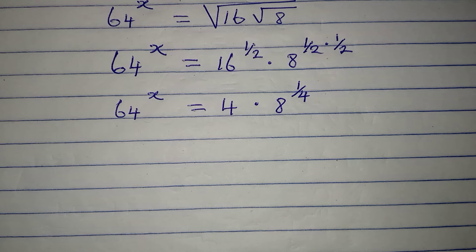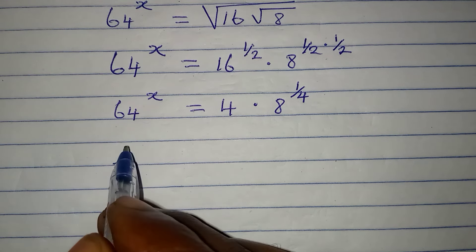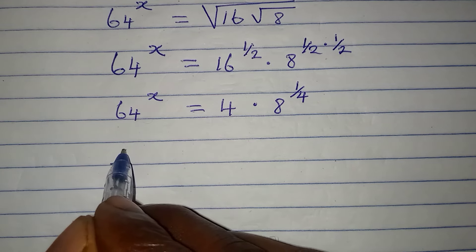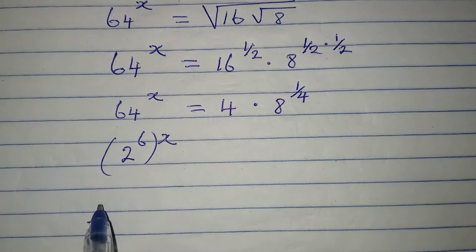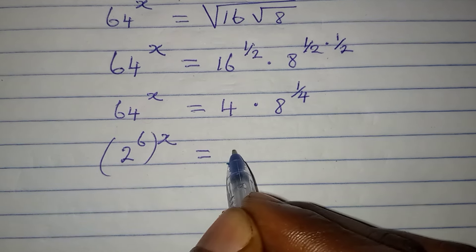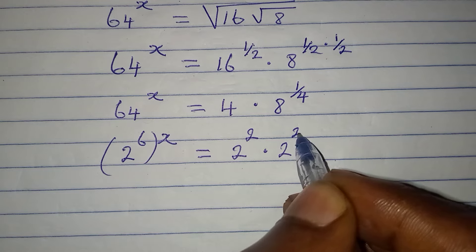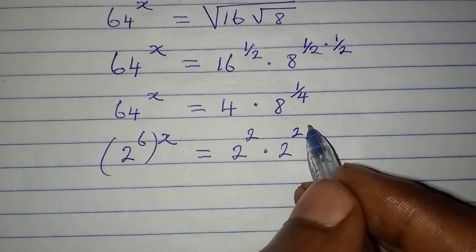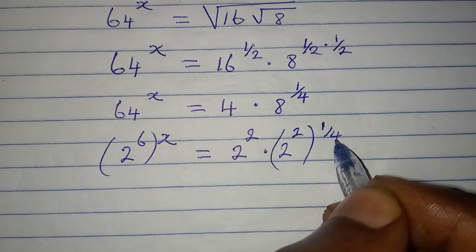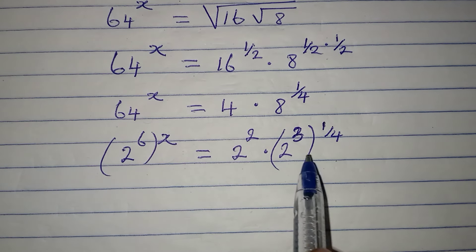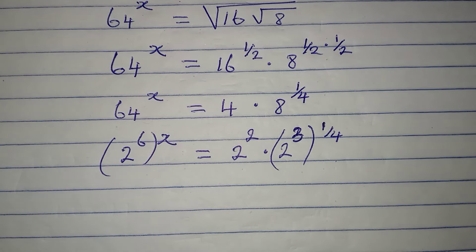Now I'm going to make sure they have the same base. 64 is the same thing as 2 to the power of 6, and then this is to the power of x, and it equals 2 to the power of 2 multiplied by 2 to the power of 2, raised to the power of 1 over 4. Actually it is 3, because 2 times 2 times 2 gives us 8 over there.